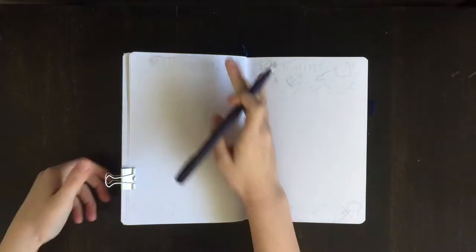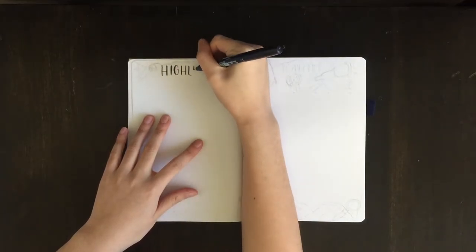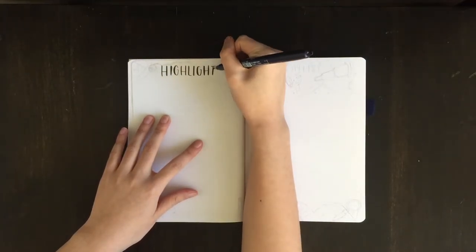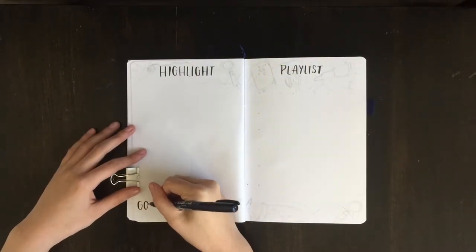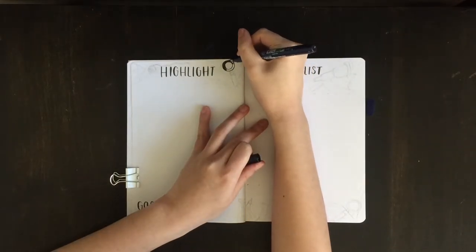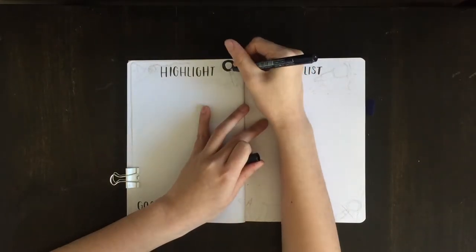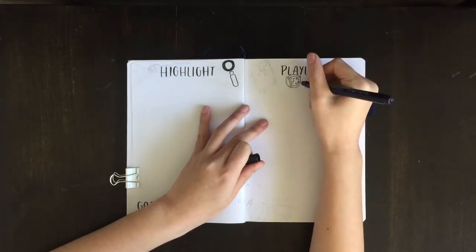I sped that up ahead because it's rather boring to watch me just color. The next page is my highlight spread. For this, I'm doing one sentence per day just summarizing how my day went. On the other page, I'm also writing in my playlists. For now, I'm decorating the titles with some more doodles, as you saw on the front page.